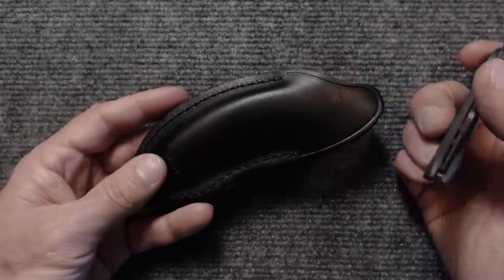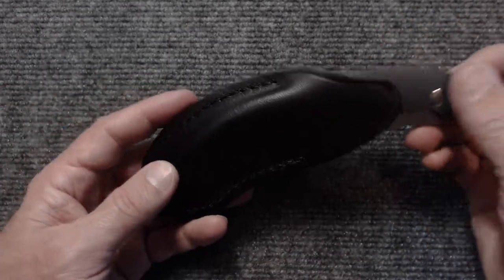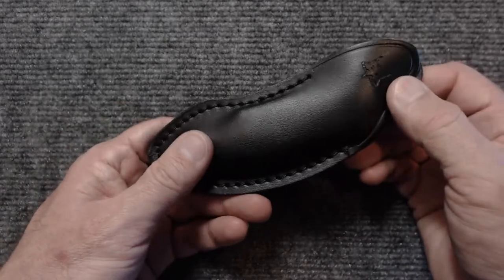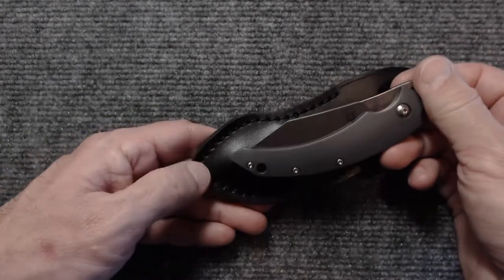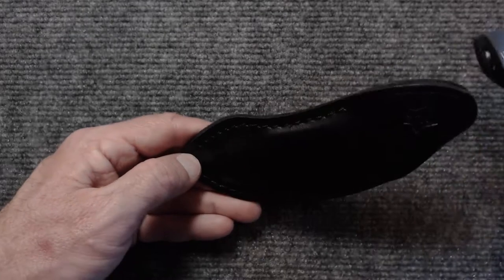And the sheath that comes with it is really just a pouch and the knife only goes in there one way. It just drops in like that. So having a lanyard on here would preclude use of the pouch. So it's kind of interesting.